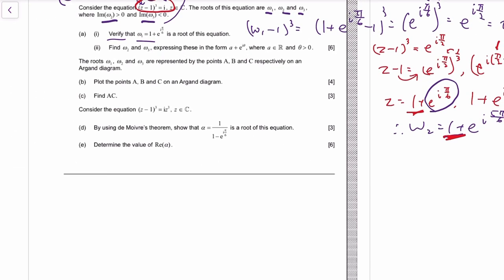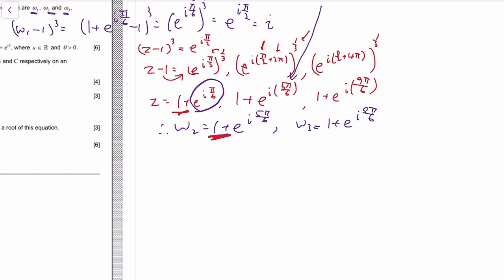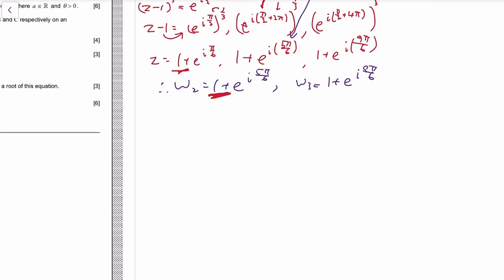Okay, then they tell us to plot them on an Argand diagram. So again, imagine if the 1 wasn't there—like we have z cubed equal to i—then the solutions would just be like e to the power of i pi over 6, so it's like having an argument of 30 degrees. That's omega 1, and then omega 2 and omega 3 are spaced out equally 120 degrees.